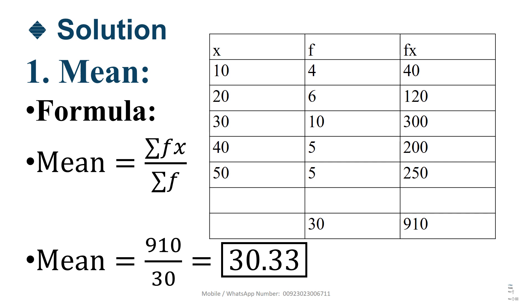Solution 1: Mean. Formula: Mean equal to summation of f of x divided by summation of f. So now, the value of x is given and frequency f is also given. According to formula fx, you can see here, here is fx. It means f multiplied by x.